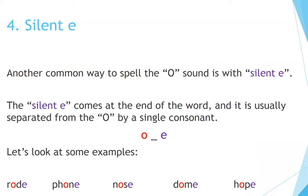Number 4: Silent E. Another common way to spell the O sound is with silent E. The silent E comes at the end of the word, and it is usually separated from the O by a single consonant. Examples: Rode, Phone, Nose, Dome, Hope.